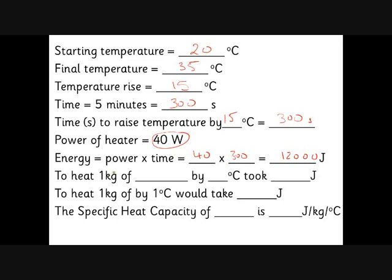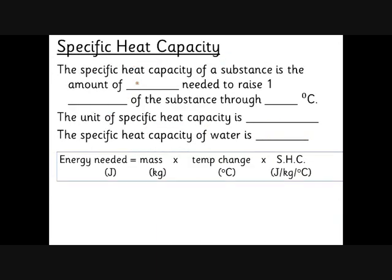So 12,000 joules heated up one kilogram — this might be true for aluminium — by 15 degrees C. If I'd only heated it by one degree C, that would take 800 joules, so every time I put in 800 joules the temperature goes up by one degree C. Therefore, the specific heat capacity of aluminium is 800 joules per kilogram per degree C. The specific heat capacity of a substance is the amount of energy needed to raise one kilogram of that substance through one degree C.